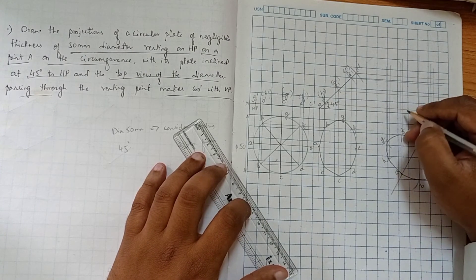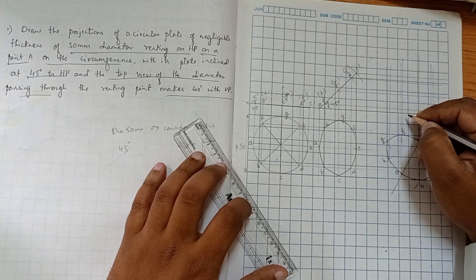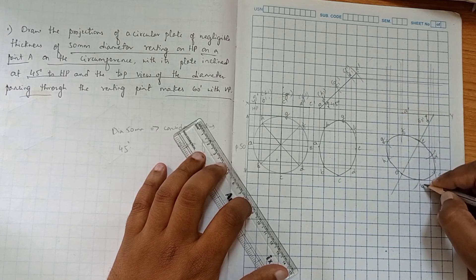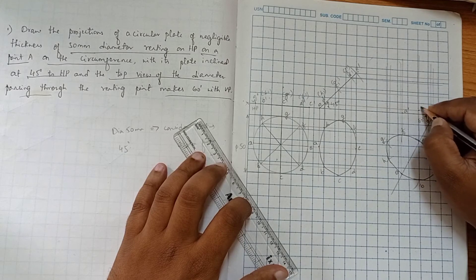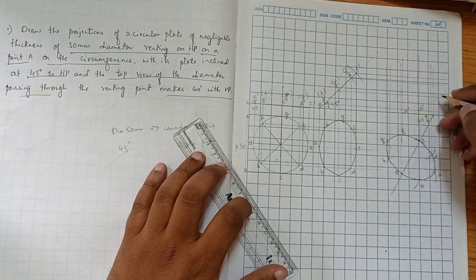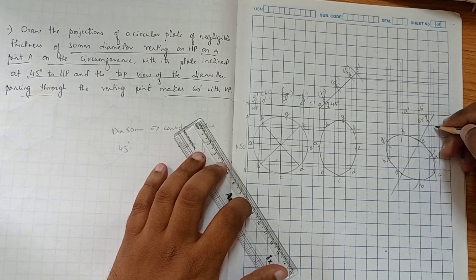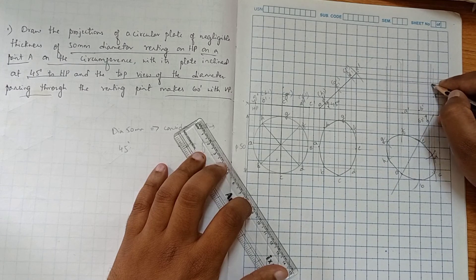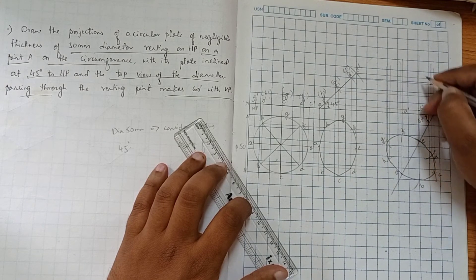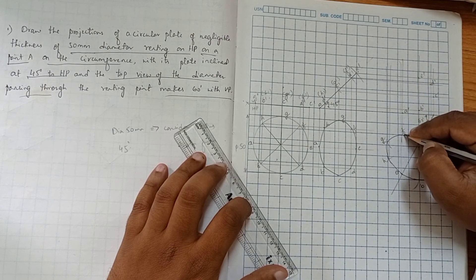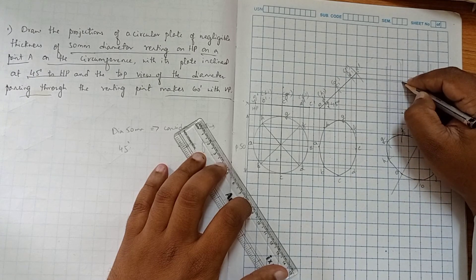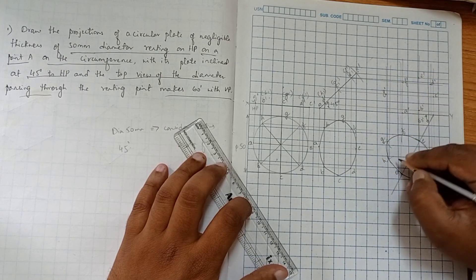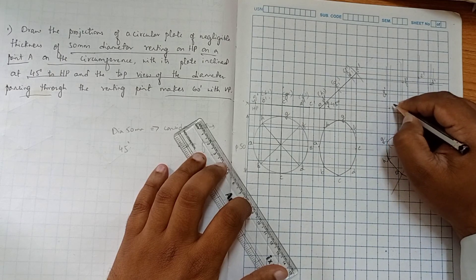Now marking the notations is important. A and A dash we get here - this is A dash. Similarly B and B dash we get here - this is B dash. Similarly C and C dash - this is C. C we get here, C dash. Similarly D and D dash, and E and E dash we get here. F and F dash meeting here. Similarly G and G dash meeting here. Now H and H dash will be meeting here.